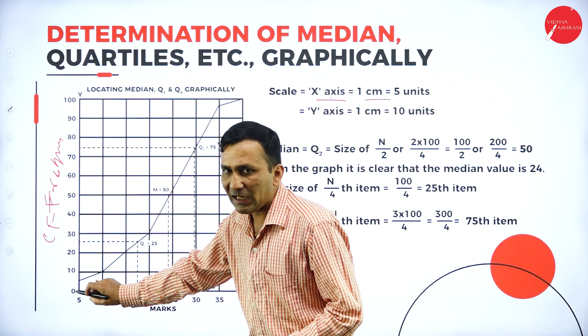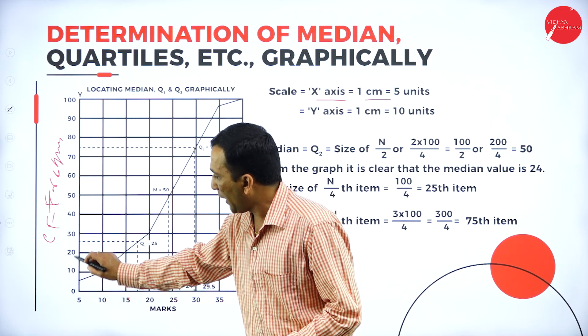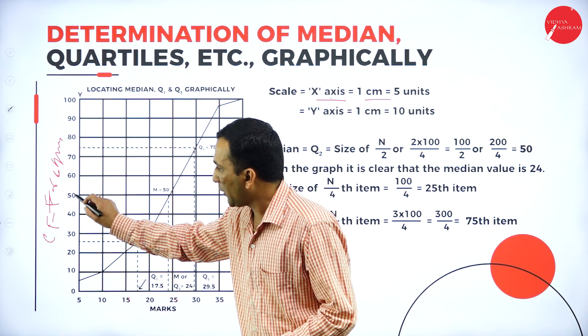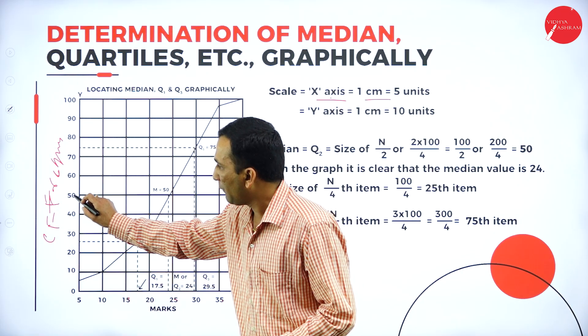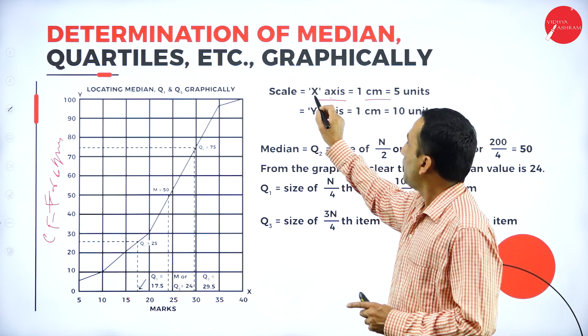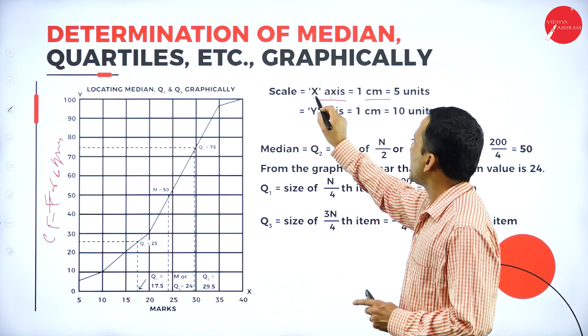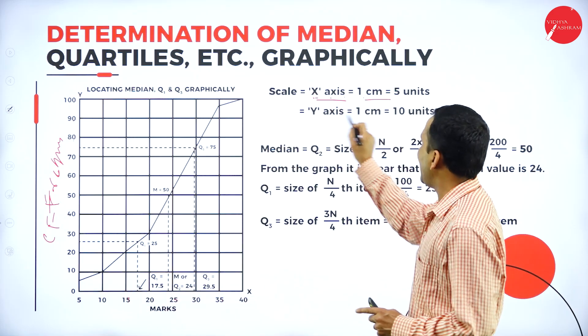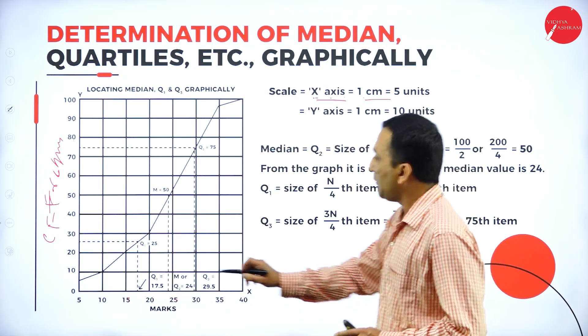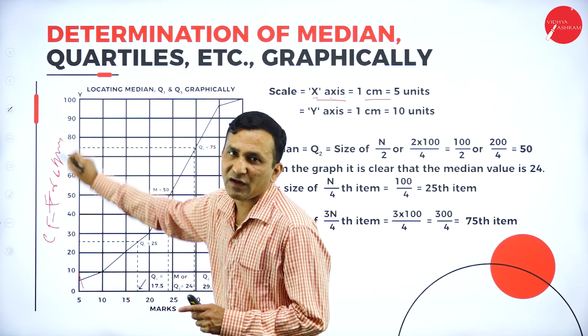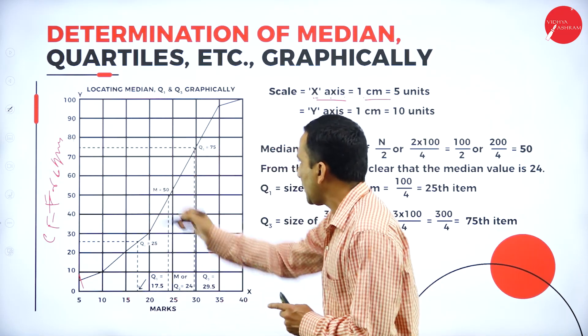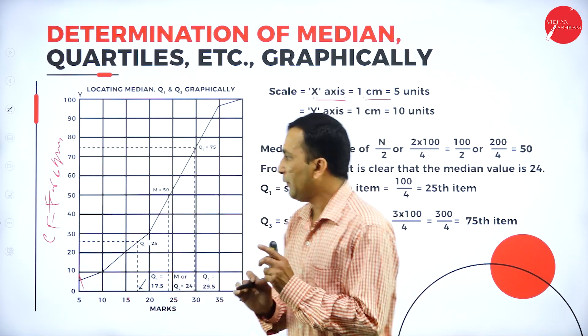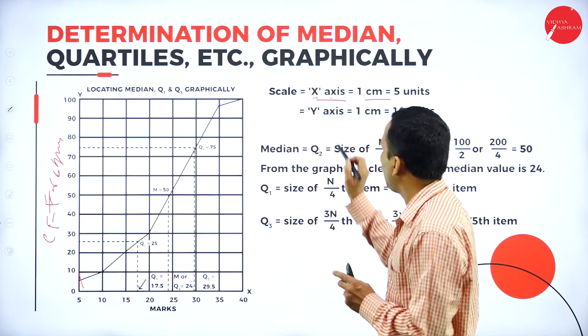We have drawn cumulative frequency by the second method — the less-than method — and calculated the median from it using a formula. We are also able to locate the median value with the help of a graph. Along with the median, I am focusing on how to locate quartile 1, quartile 2, and quartile 3. Quartile 2 is nothing but your median.